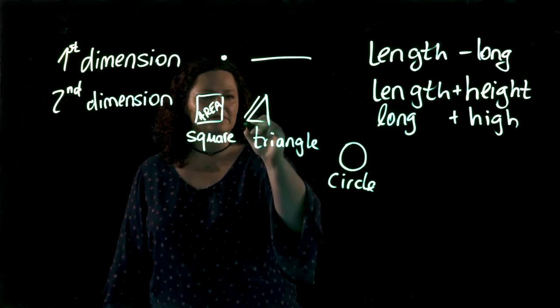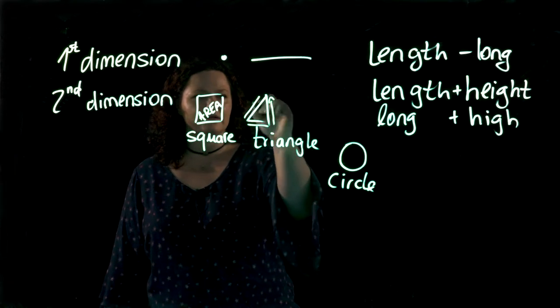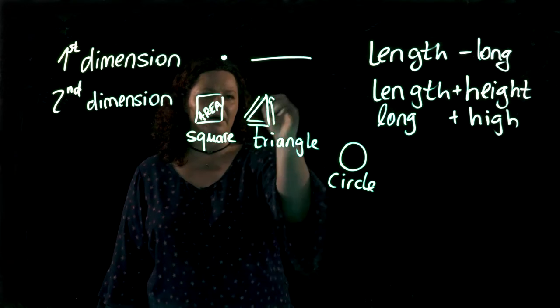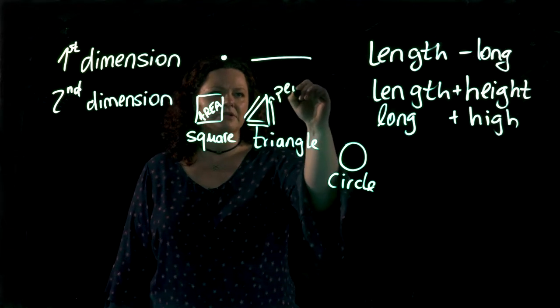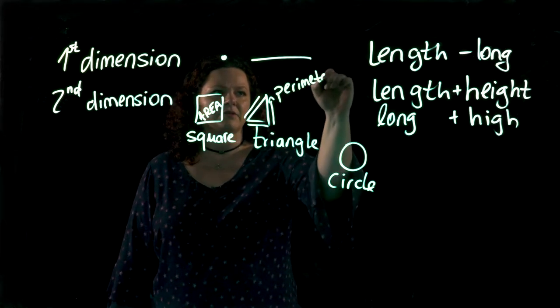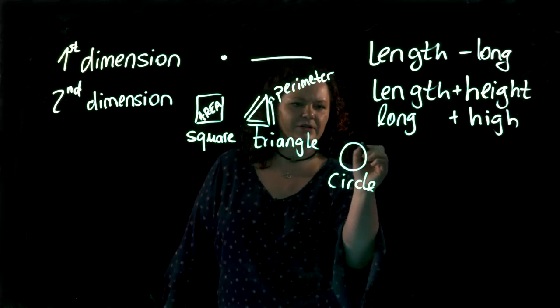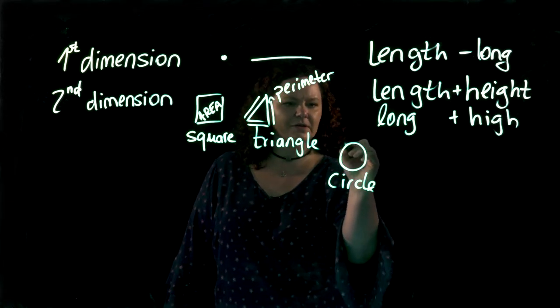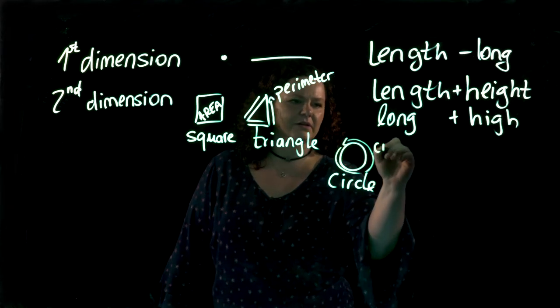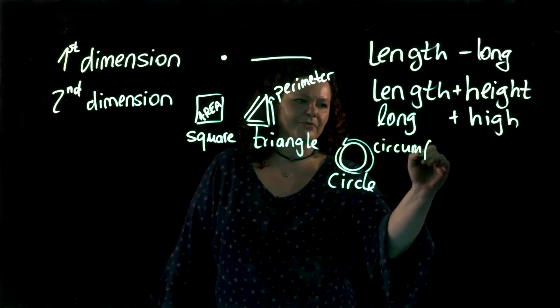We can also calculate this here. This means how much it takes around it. This is called the perimeter of something. It has a different name for the circle. So getting around the circle gives us the circumference.